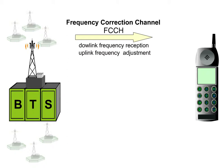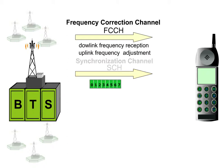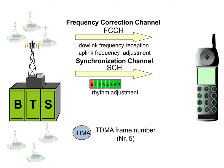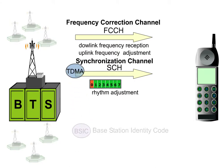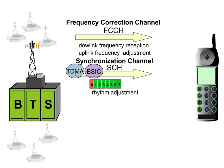The synchronization channel then helps the mobile station to synchronize itself to time slot 0 sent out by the BTS. This means the mobile station must adjust to the rhythm given by the BTS. The SCH contains the TDMA frame number as well as the base station identity code, containing basic information about the network operator that can be compared with the info stored on the SIM card.